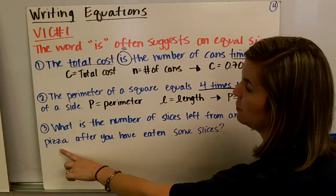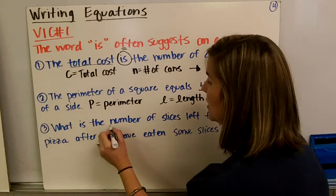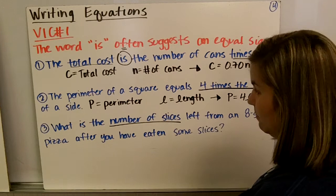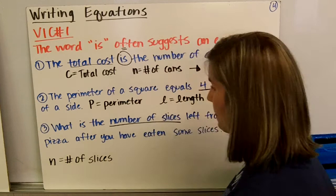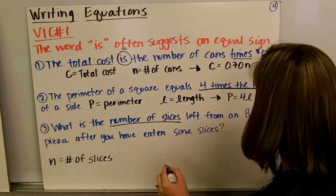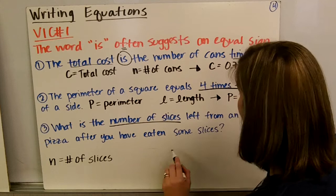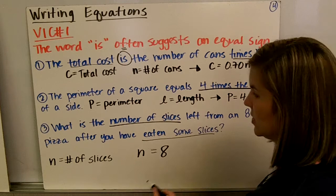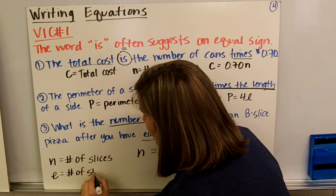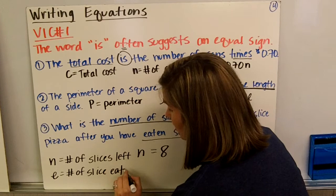What is the number of slices left from an 8-slice pizza after you have eaten some slices? What is the number of slices? That's what we want to find. Let's say n equals the number of slices left. The number of slices left from an 8-slice pizza—8 is what we started at. We've eaten some slices, so let's say e equals the number of slices eaten.